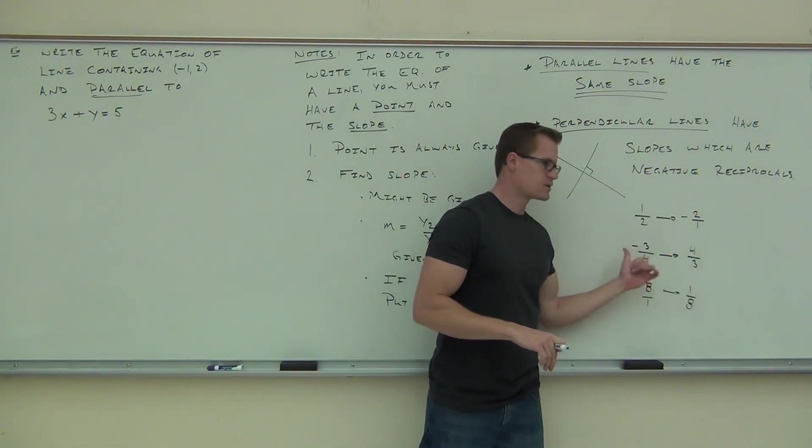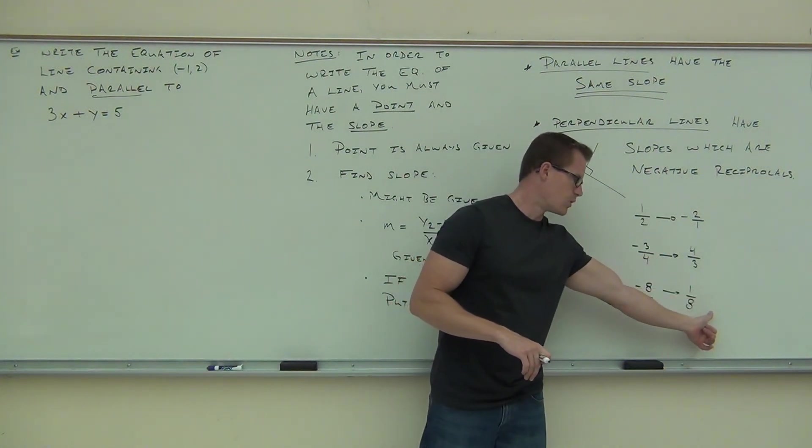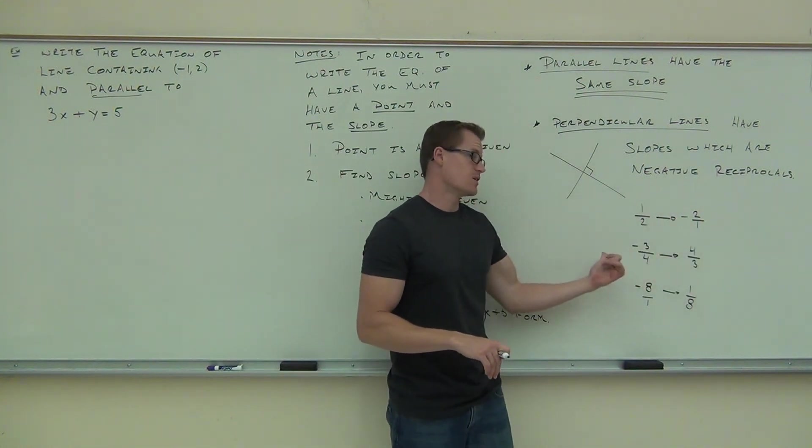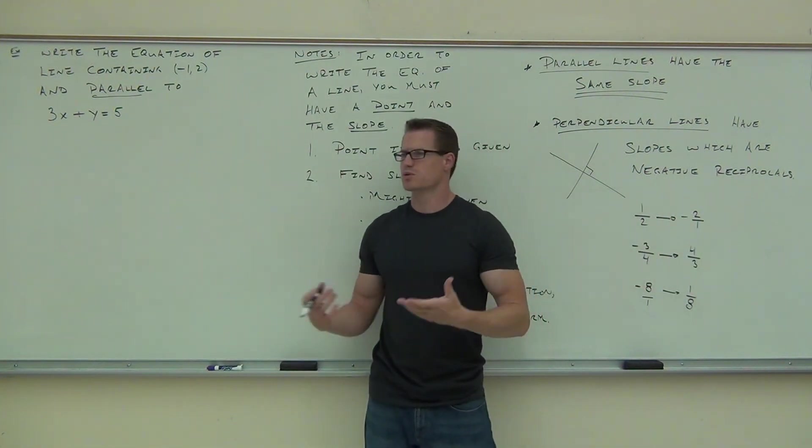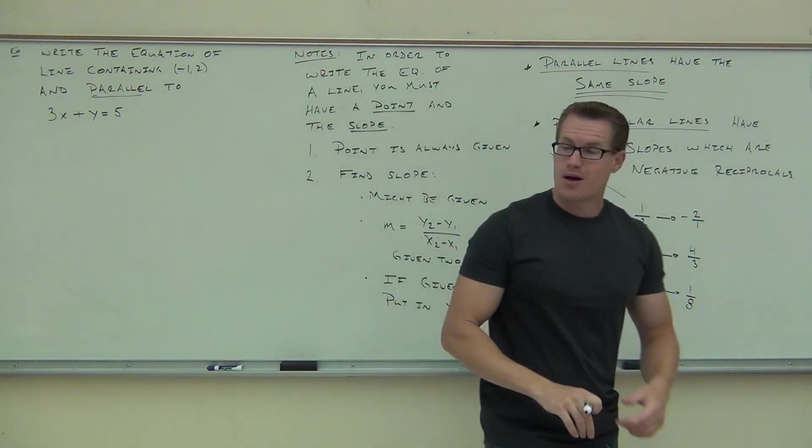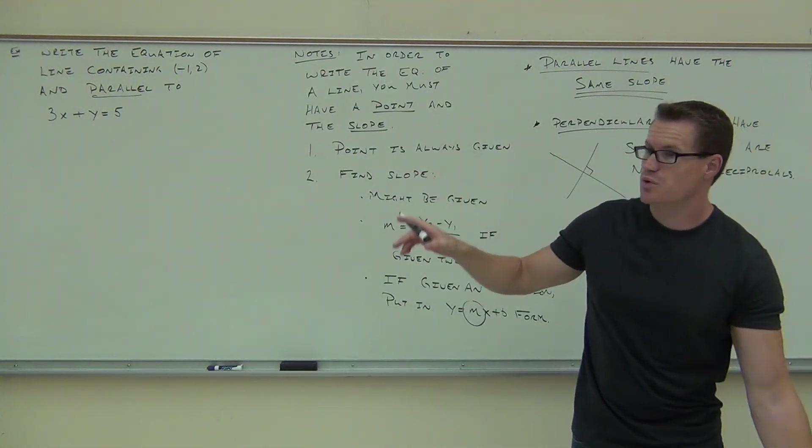Also notice that these things go backwards and forwards. A negative reciprocal of one-eighth is negative eight. A negative reciprocal of four-thirds is negative three-fourths. These are negative reciprocals of each other. How many people feel okay about finding the negative reciprocal? Good deal. Now we're ready to go ahead and accomplish this problem.